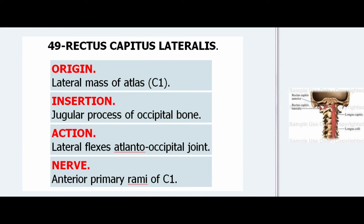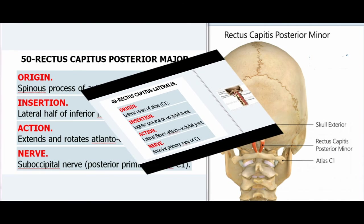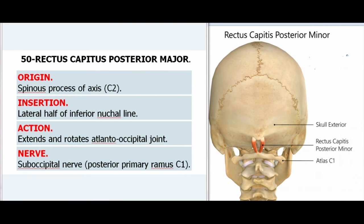49. Rectus Capitis Lateralis. Origin: Lateral mass of atlas (C1). Insertion: Jugular process of occipital bone. Action: Laterally flexes atlanto-occipital joint. Nerve: Anterior primary rami of C1. 50. Rectus Capitis Posterior Major. Origin: Spinous process of axis (C2). Insertion: Lateral half of inferior nuchal line. Action: Extends and rotates atlanto-occipital joint. Nerve: Suboccipital nerve, posterior primary rami of C1.